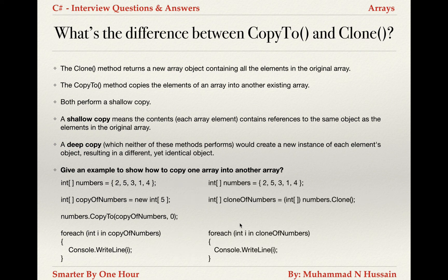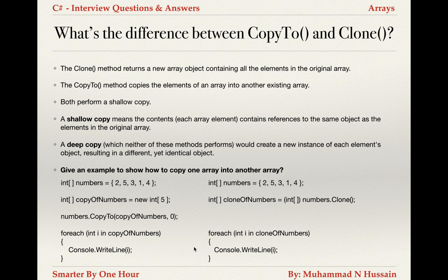Similarly, in this example I am declaring and initializing the original array. Here I am using that array object and calling its clone method. And as I mentioned, because it returns an object, I am typecasting and storing it into the new object. Then I am using a for-each loop to go through all the members and print them on the screen.